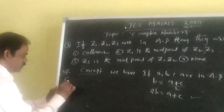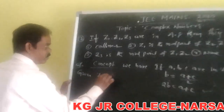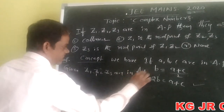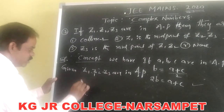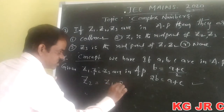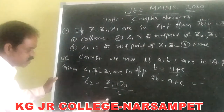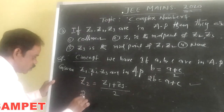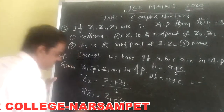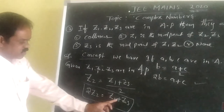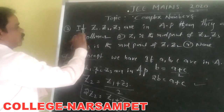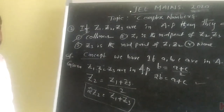Apply this concept here. Given z1, z2, z3 are in arithmetic progression, applying the condition: z2 equals (z1 + z3) divided by 2, so 2z2 equals z1 plus z3. If this condition holds — z1 plus z3 equals 2z2 — then automatically z1, z2, z3 are collinear. So the first option is the correct answer.